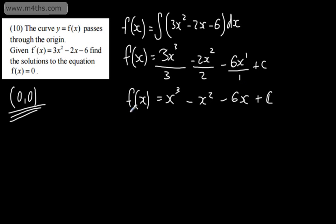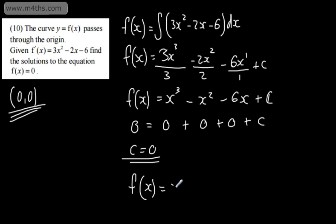So from here, if we sub this in, 0 is equal to 0 plus 0 plus 0 plus c. So from here, we can say c is equal to 0. OK, that gives us now f of x. f of x is equal to x cubed minus x squared minus 6x.